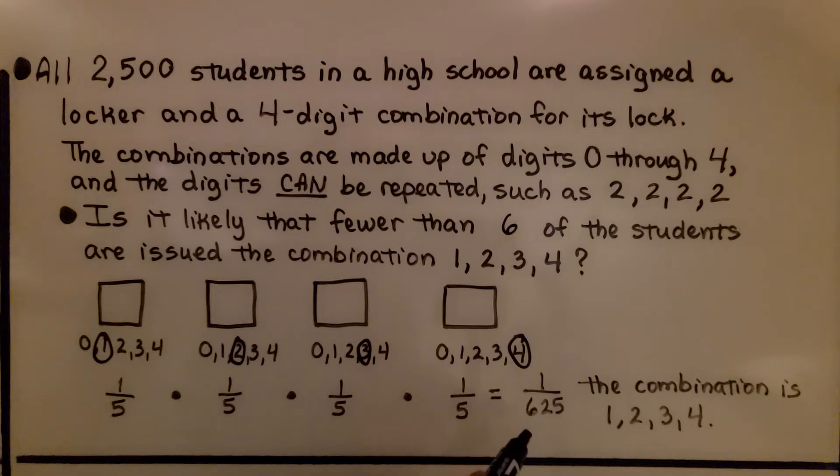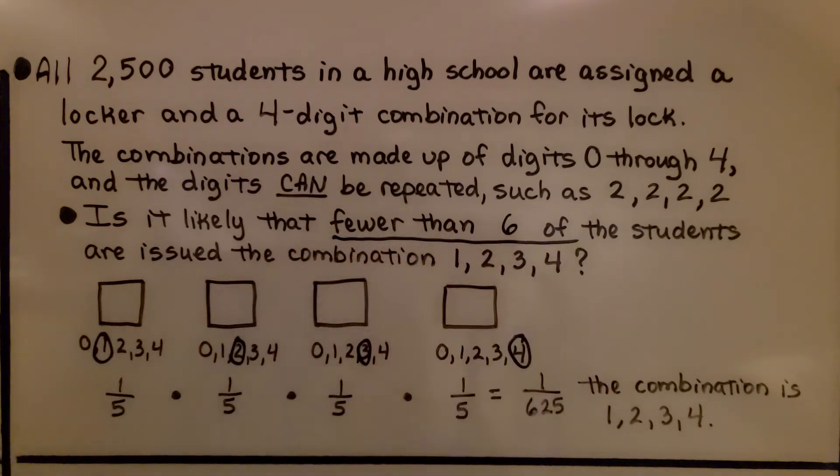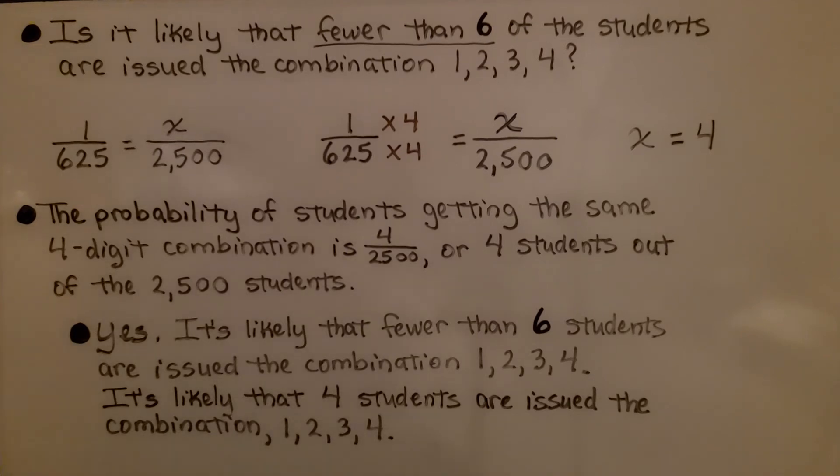There's a probability of one-six-hundred-twenty-fifth that the combination is one-two-three-four, but it's asking is it likely that fewer than six of the students are issued that combination? That's the question we need to answer. Is it likely that fewer than six of the students are issued the combination one-two-three-four?